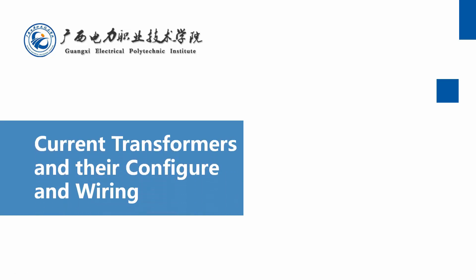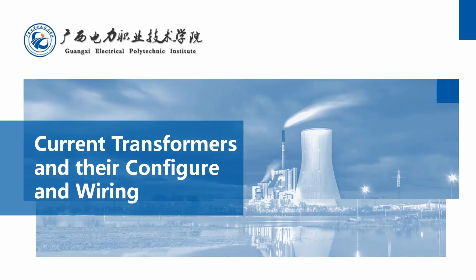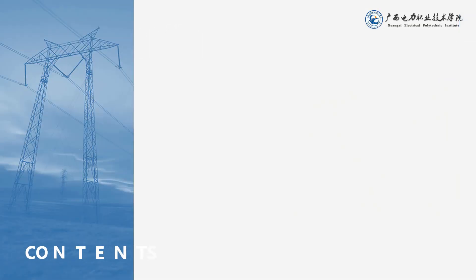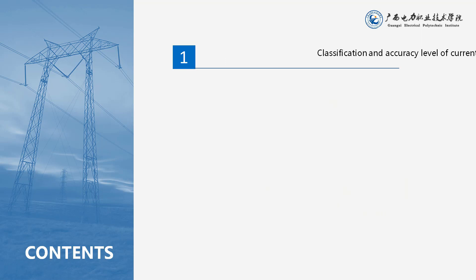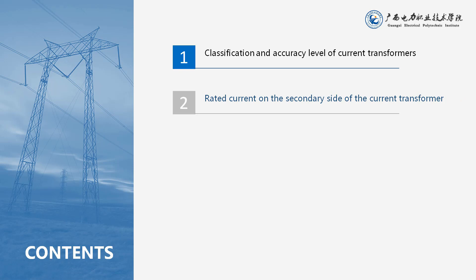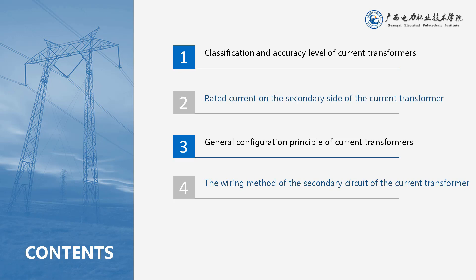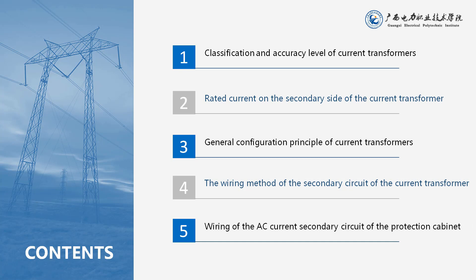Current Transformers and Their Configuration and Wiring. Contents: 1. Classification and Accuracy Level of Current Transformers. 2. Rated Current on the Secondary Side of the Current Transformer. 3. General Configuration Principle of Current Transformers. 4. The Wiring Method of the Secondary Circuit of the Current Transformer. 5. Wiring of the AC Current Secondary Circuit of the Protection Cabinet.